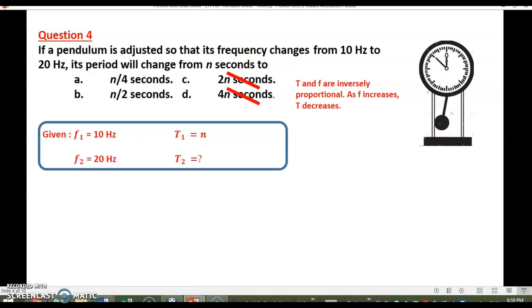So now we are left with n over 4 seconds and n over 2 seconds. Making use of the given, the initial frequency is 10 hertz. The initial period is n. The final frequency or the new frequency is 20 hertz. What is the period? So in general T is equal to 1 over f.